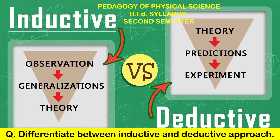In the pedagogy of physical science, B.Ed. syllabus second semester, the question is: differentiate between inductive and deductive approach. One of the most important objectives of searching new knowledge in science is to formulate and test hypotheses. Hypotheses are simply tentative explanations — put forth for the time being to account for observed phenomena. Formulating testable hypotheses draws heavily on the scientist's creativity and imagination. One of the general patterns to formulate a hypothesis is inductive logic, also called induction.